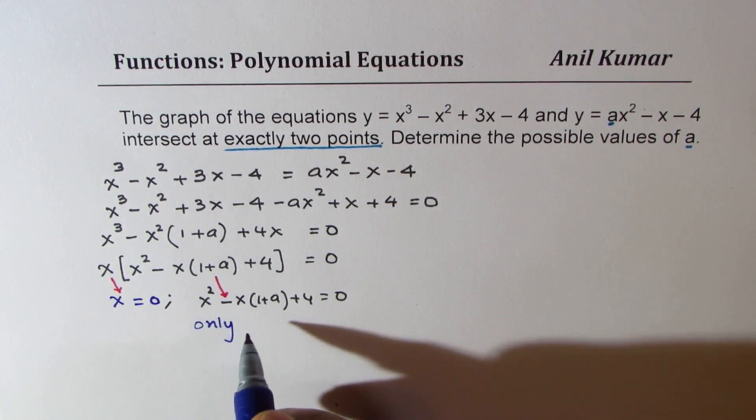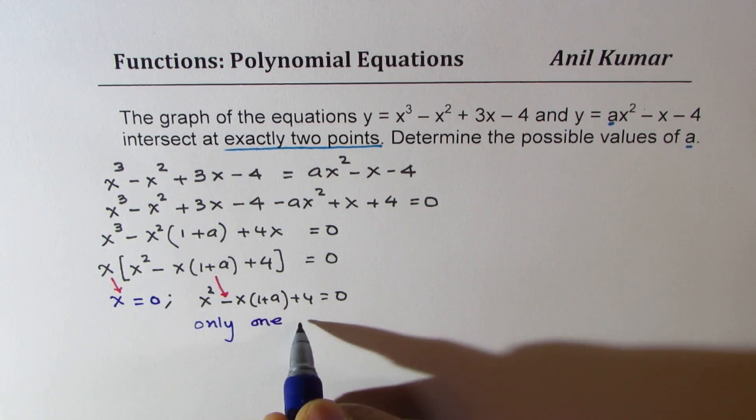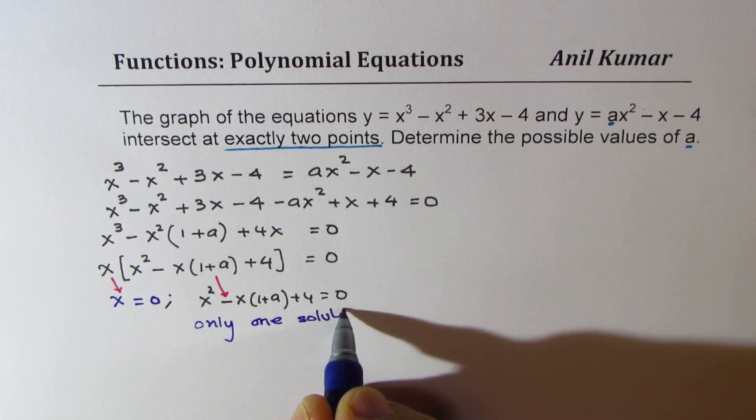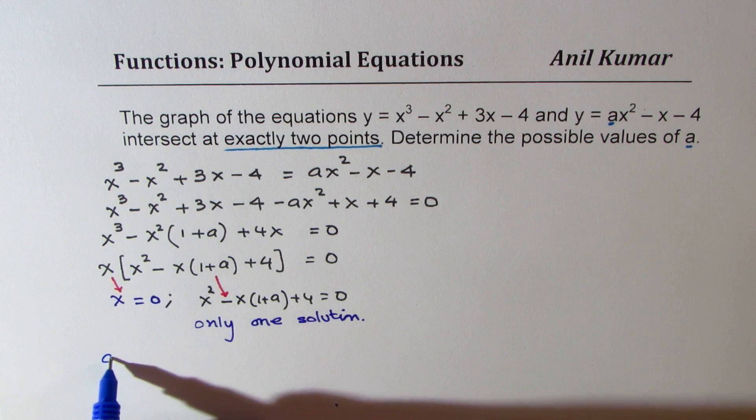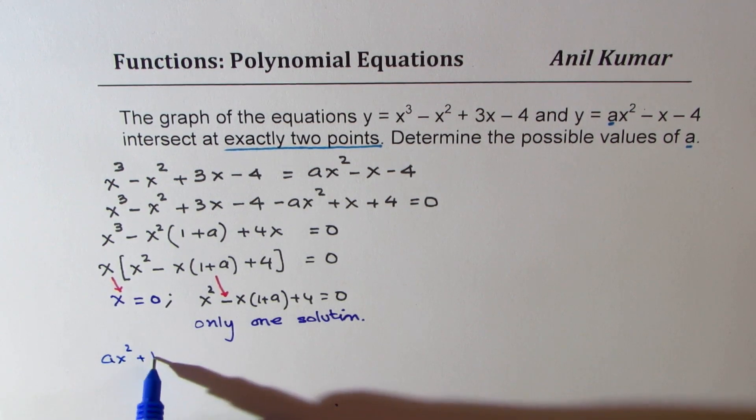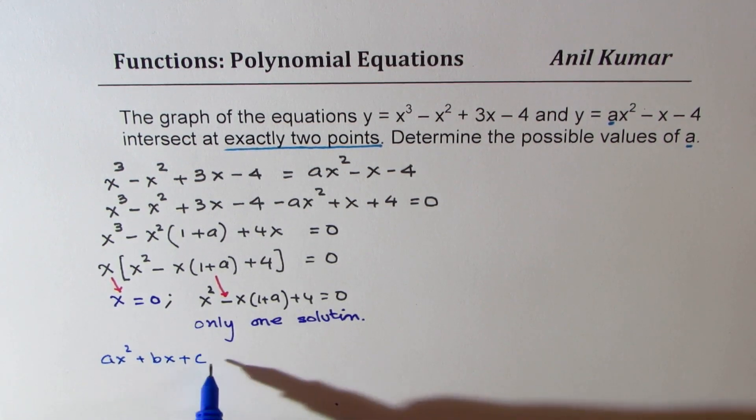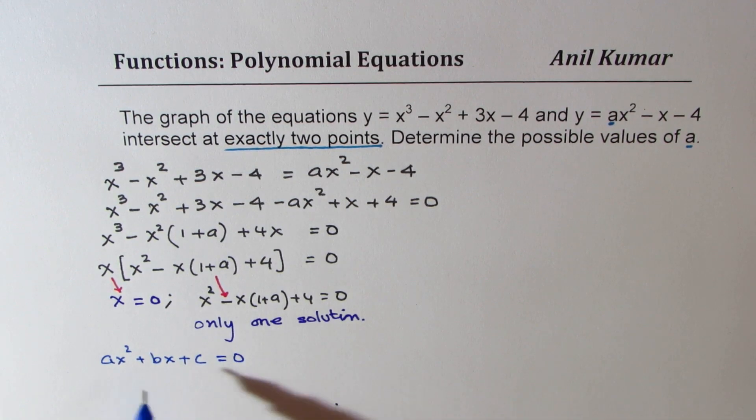We need only one from here, not two solutions. We need only one from here. Now how is that possible?